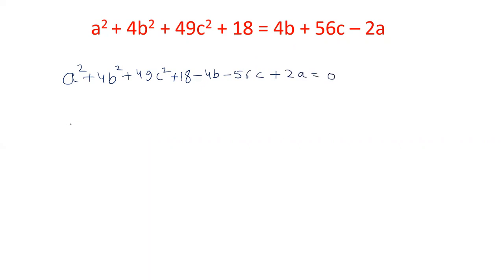Now let's take the similar terms together. a² + 2a together, plus 4b² - 4b also together, and 49c² - 56c that is also together, and we have left with 18 = 0.